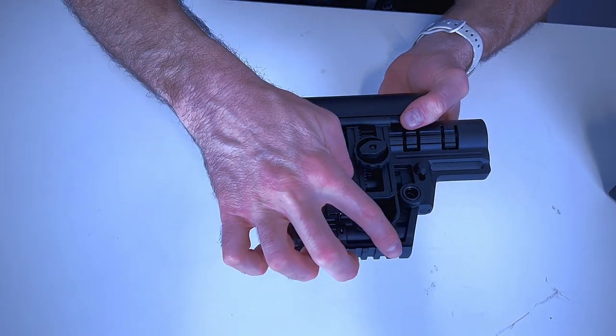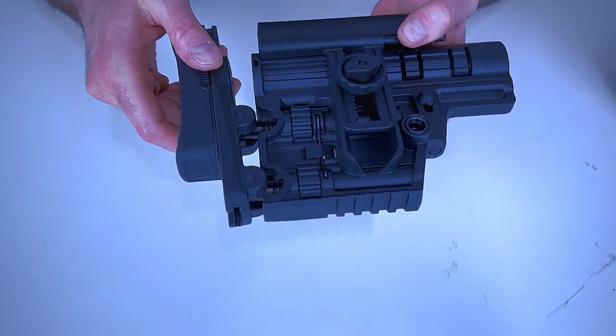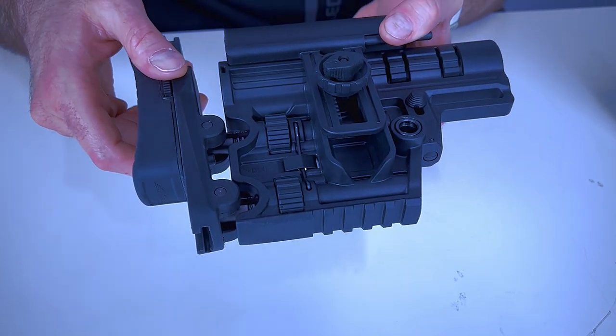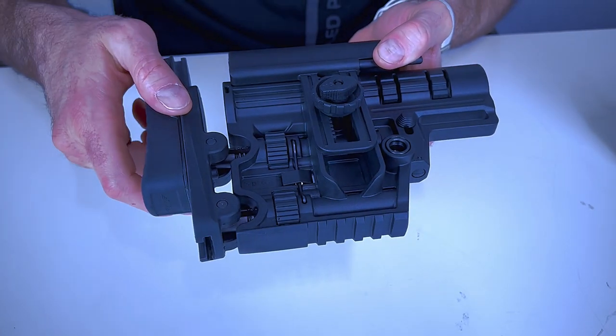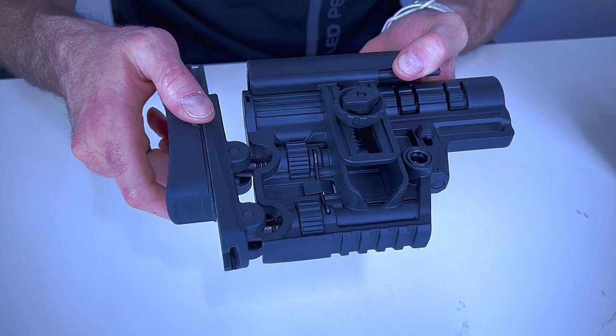Also you have Picatinny rail here on the bottom so that you can mount a monopod or whatever accessory you might need here on the bottom of your stock.